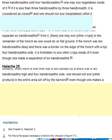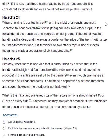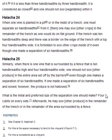Halakha 24. When one vine is planted in a pit, or in the midst of a trench, one must separate six handbreadths from it. Then one may sow other crops in the remainder of the trench, as one would do on flat ground. If the trench was ten handbreadths deep, and there was a border on the edge of the trench with the top four handbreadths wide, it is forbidden to sow other crops inside of it, even though one made a separation of six handbreadths. Halakha 25. Similarly, when there is one vine that is surrounded by a fence that is ten handbreadths high and four handbreadths wide, one should not sow other produce in the entire area set off by the barriers, even though one makes a separation of six handbreadths. If one made a separation of six handbreadths and sowed, however, the produce is not hallowed. What is the initial and preferred size of the separation one should make? Four cubits on every side. Afterwards, he may sow other produce in the remainder of the trench, or in the remainder of the area surrounded by a fence.